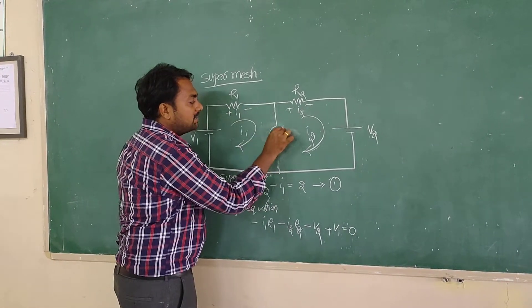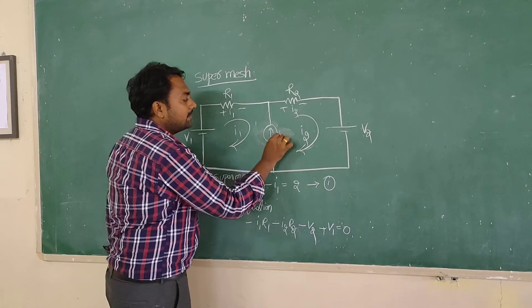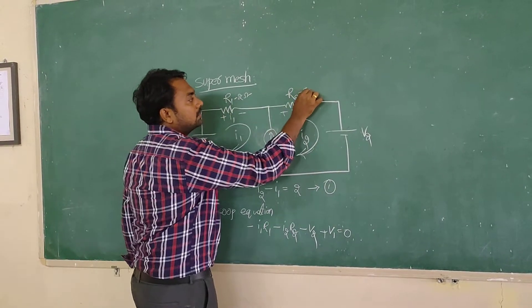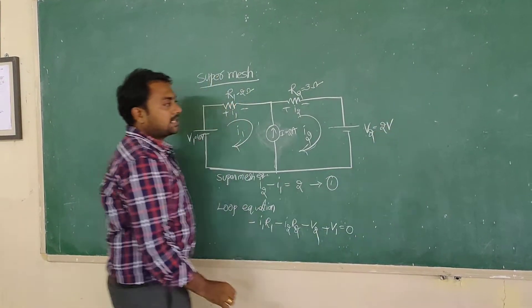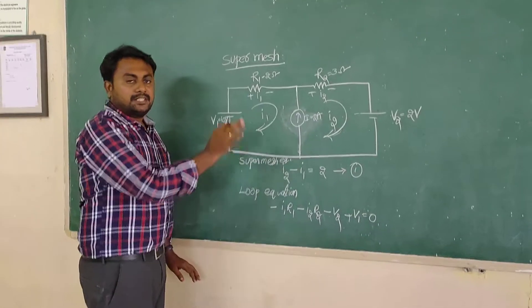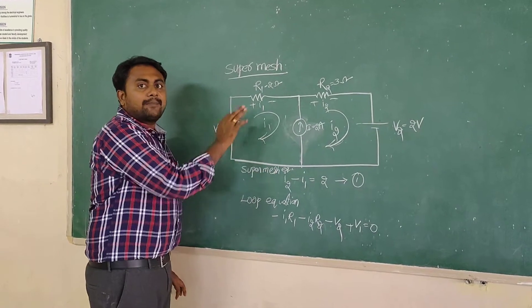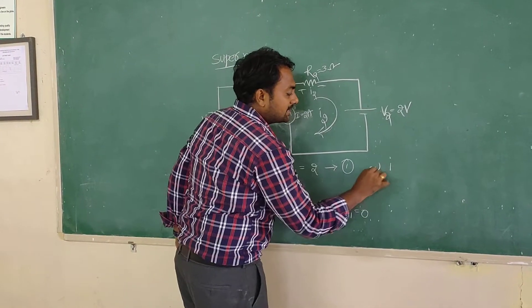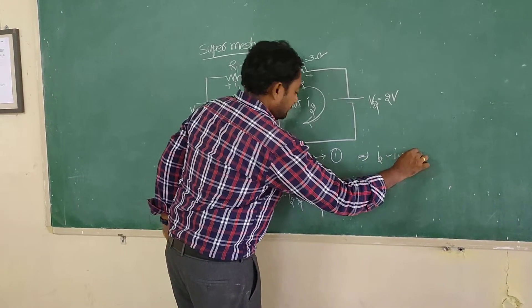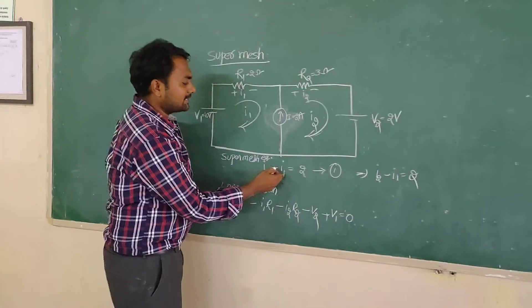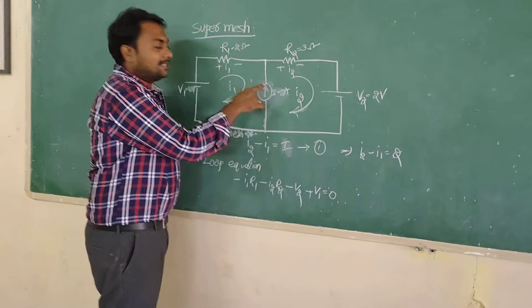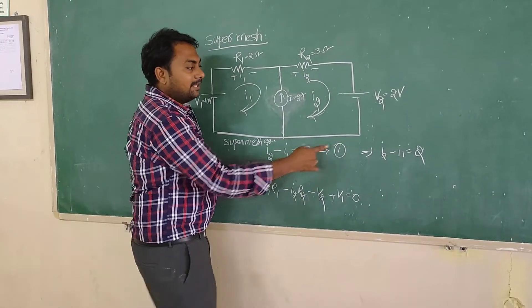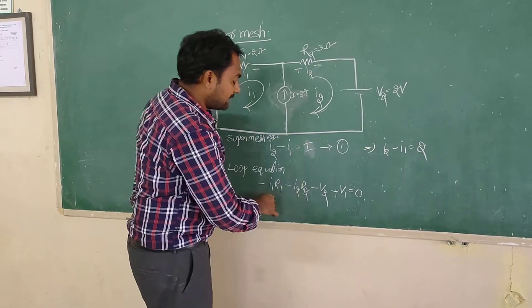Let us take values for the same problem. The value of the current source I is 2 amperes, V1 is 10 volts, R1 is 2 ohms, R2 is 3 ohms, and V2 is 2 volts. From the super mesh equation: I2 minus I1 equals 2. This is equation 1. The current source value is 2, so I2 minus I1 equals 2 stands.